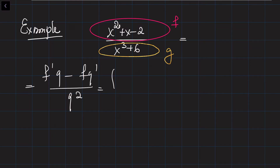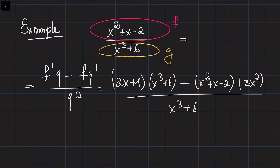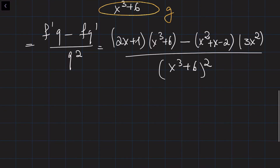The derivative of f is simply 2x + 1, multiplied by g which is x³ + 6. Then minus f, which is x² + x − 2, multiplied by the derivative of the second function g', which is 3x². This is all divided by (x³ + 6) squared. We could simplify by expanding all brackets, but our main goal was to show how to apply the quotient rule.